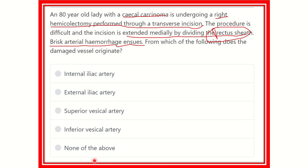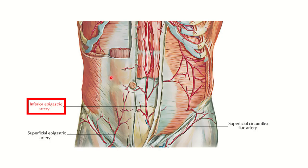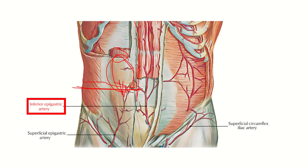Here we can see the right side of the body and the left side of the body. The right hemicolectomy is done through a transverse incision, extended medially. We can see the rectus sheath here — the vessel below the rectus sheath is also divided. So suddenly brisk hemorrhage develops and we have to find out the source.